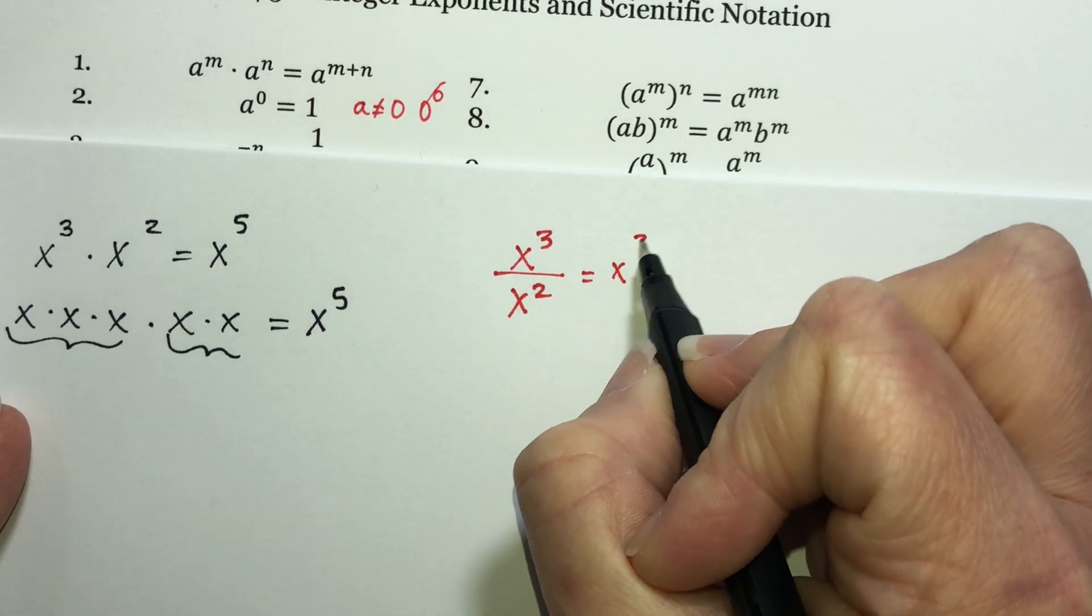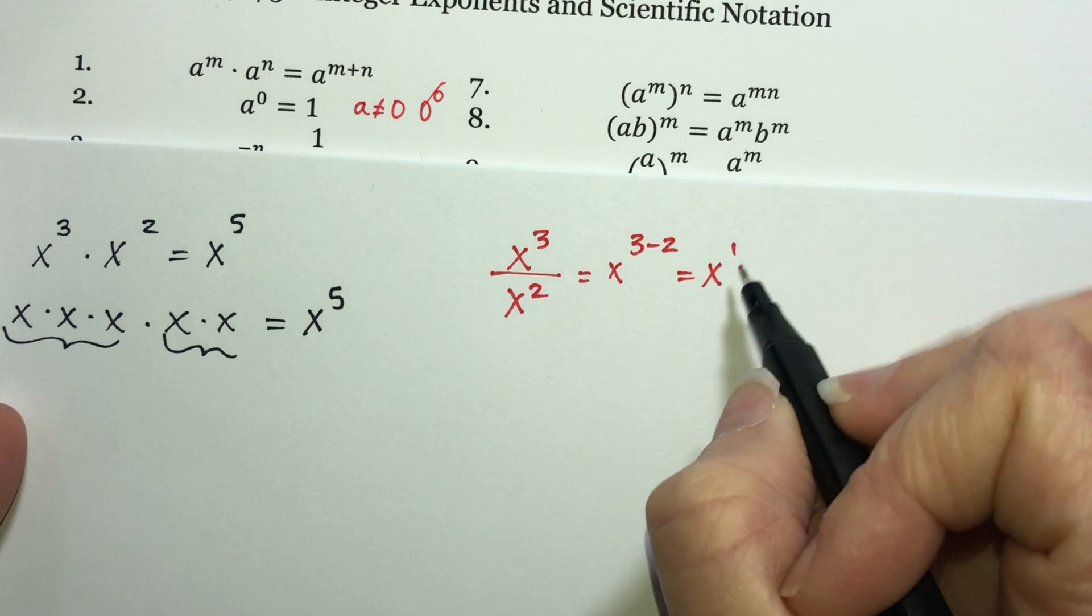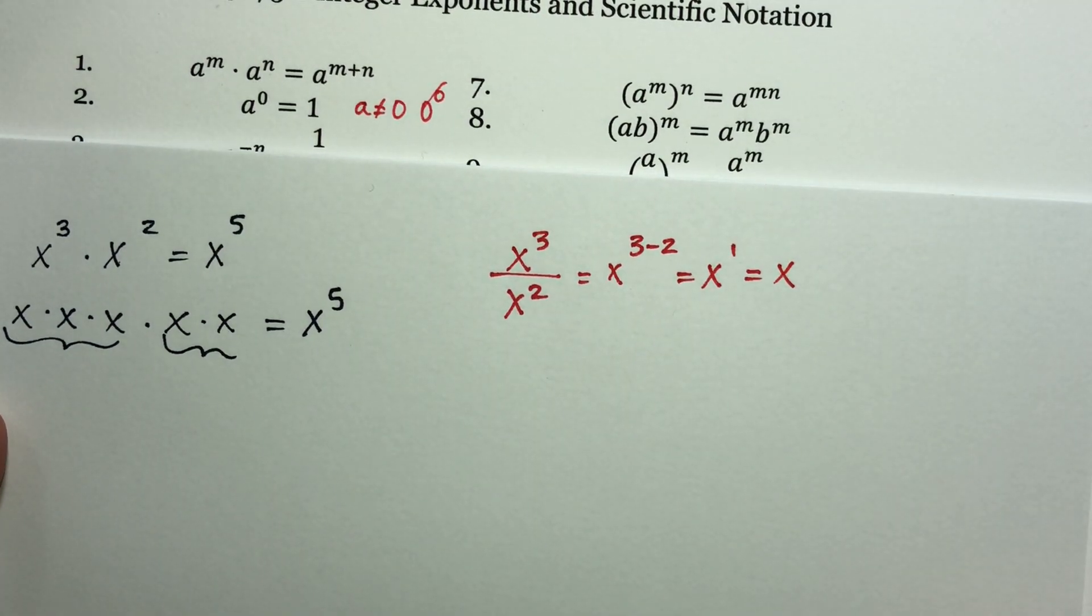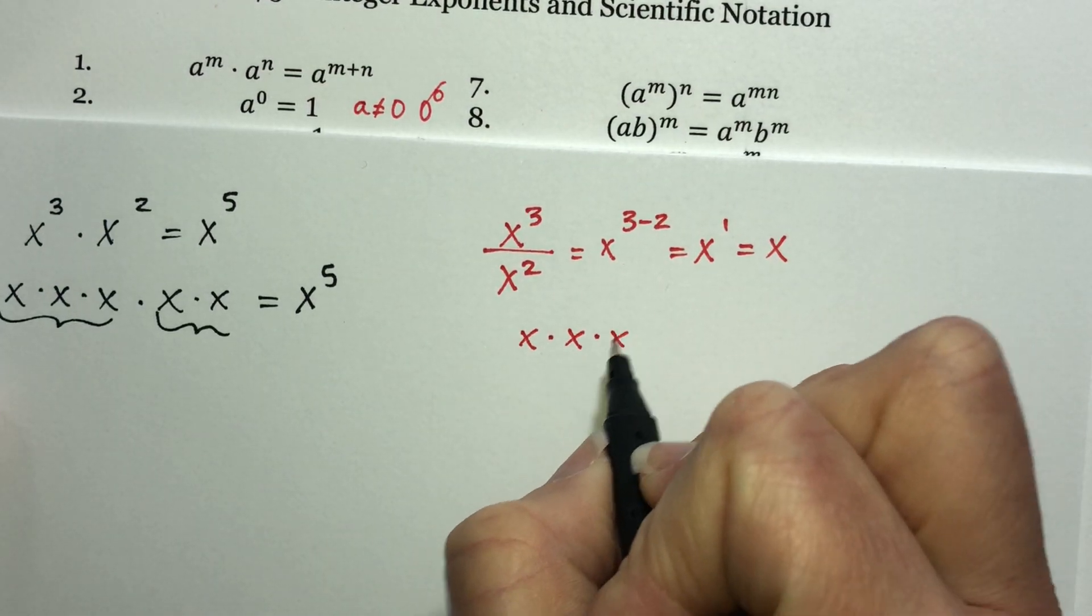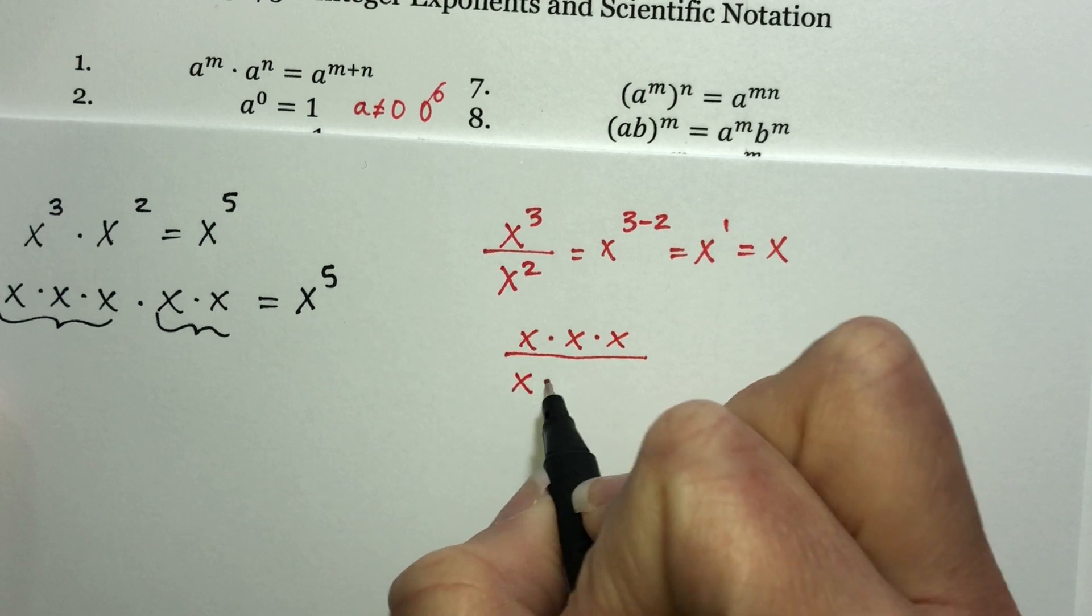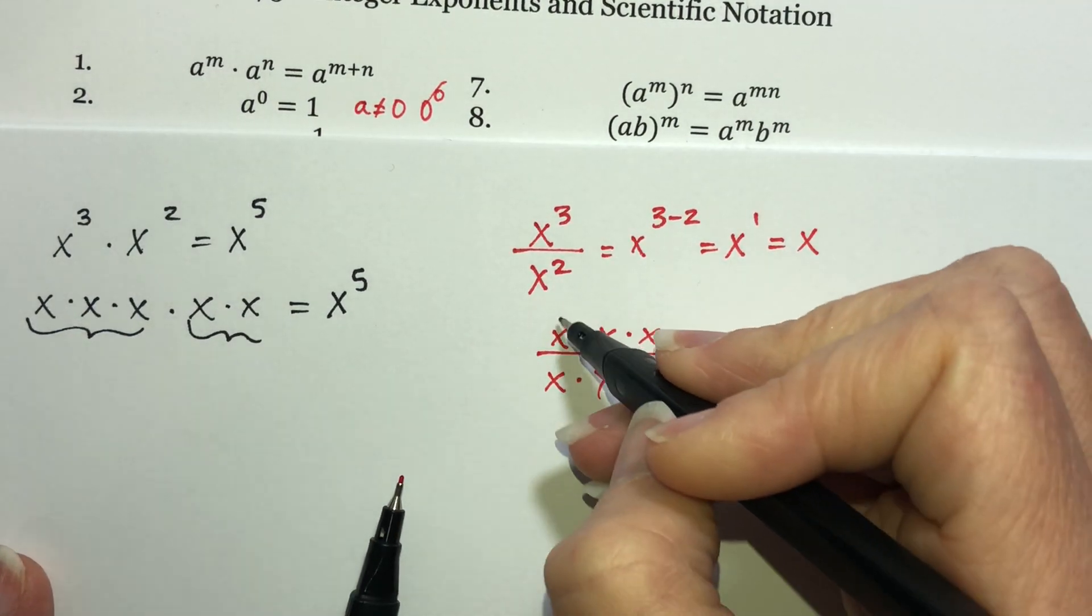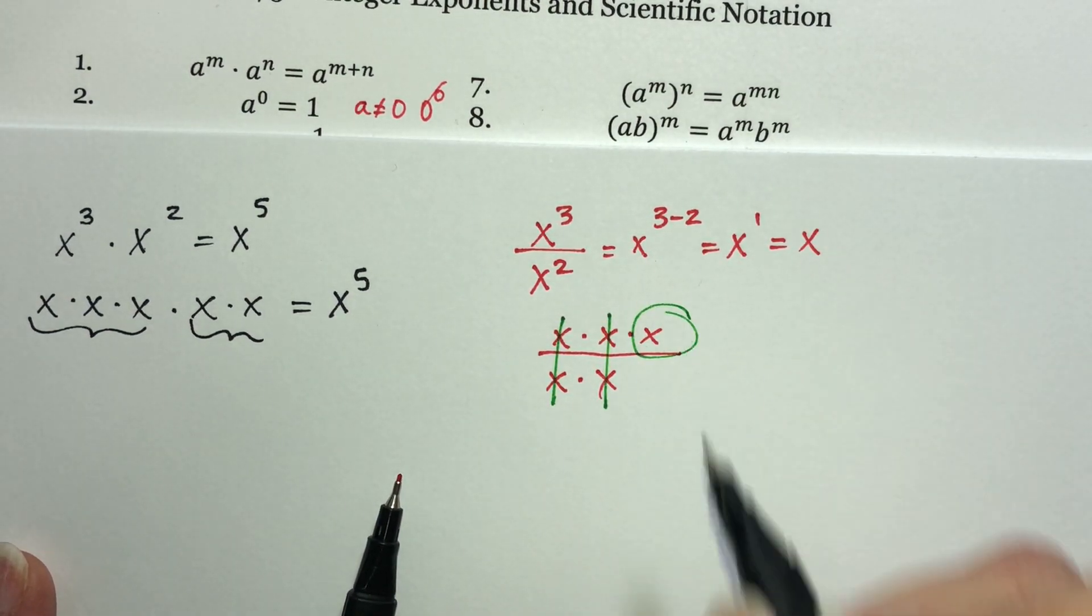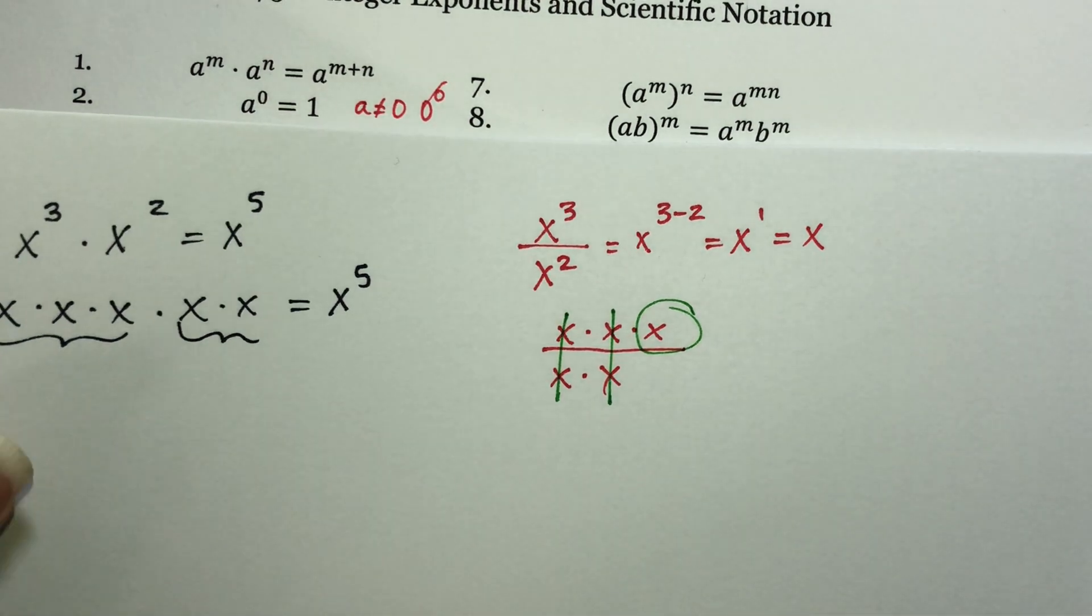If I had x cubed over x squared, I have the same base, and that says I should subtract my exponents, which will give me x to the first power, and we usually don't write the one because mathematicians are lazy. Let's think about what this means. This means x times x times x over x times x. And then if we just start canceling things out, these x's cancel, these x's cancel, and what are you left with? A single x. That's what's happening every time there.